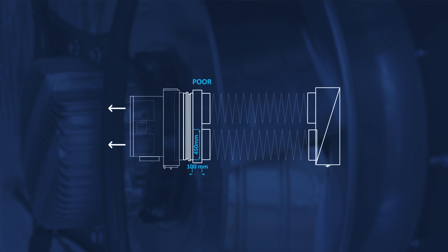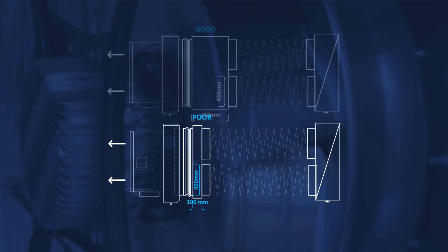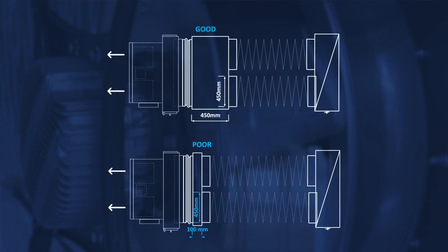Avoid short return air plenums with inlets close to the unit. Unequal static pressure due to turbulence in short return air plenums encourages uneven airflow and high air speed across the indoor coil, resulting in poor performance and water carryover.